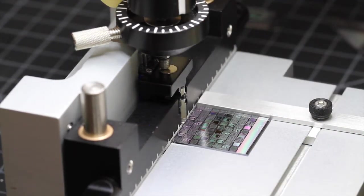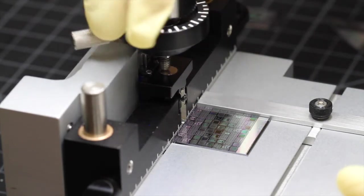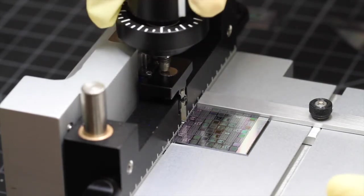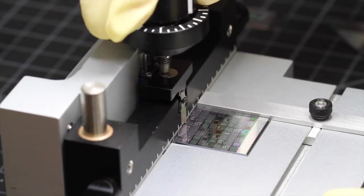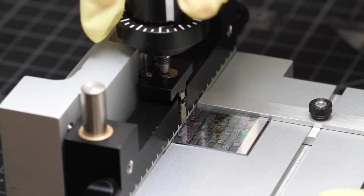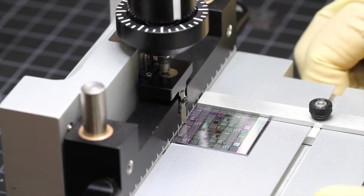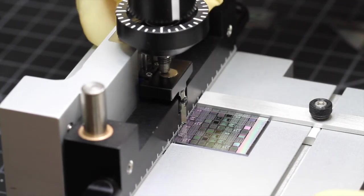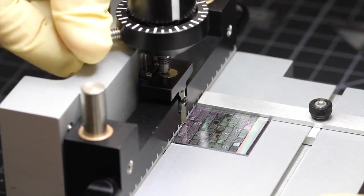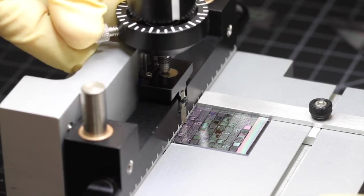Now I'm going to indent the sample with the diamond indenter. I can do fine positioning with the indenter positioning knob and do a calibrated indent using my clock dial.